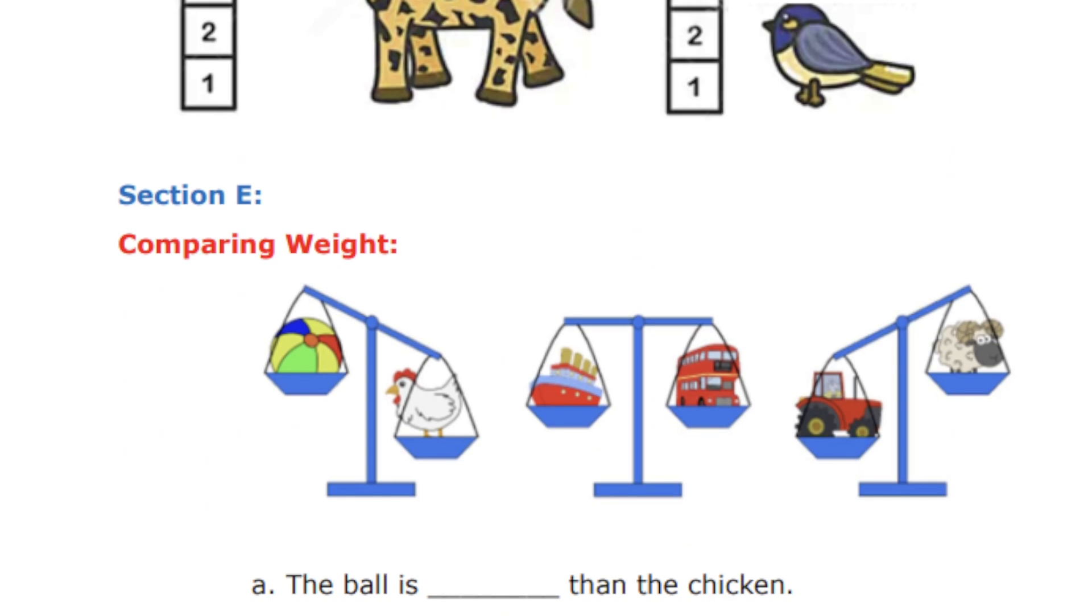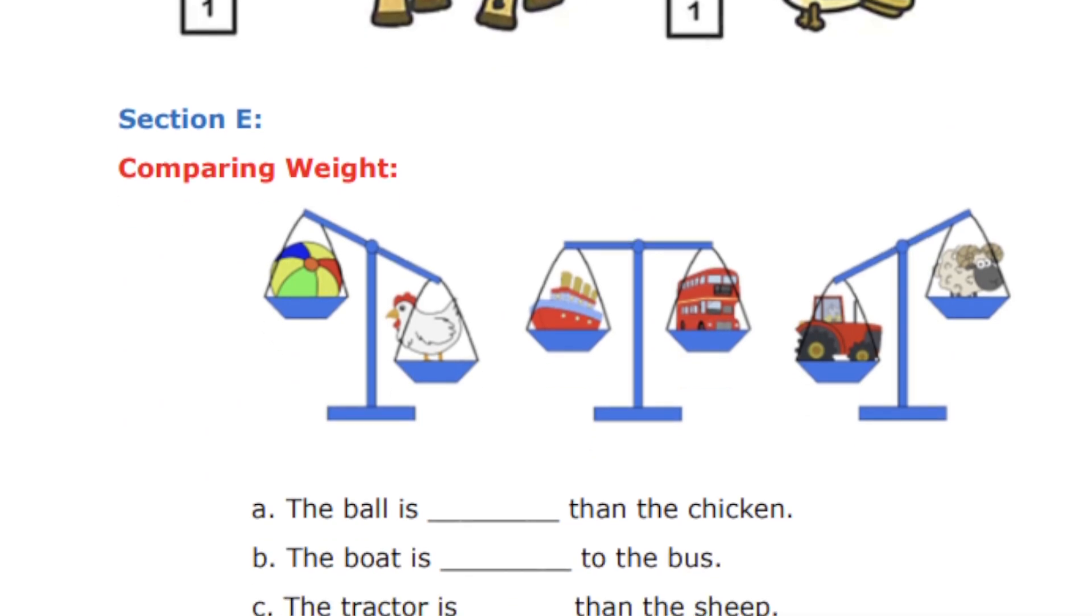So the next one is Section E, comparing the weight. So we have three weighing machines here with ball and a chicken, ship and a bus, tractor and a sheep.